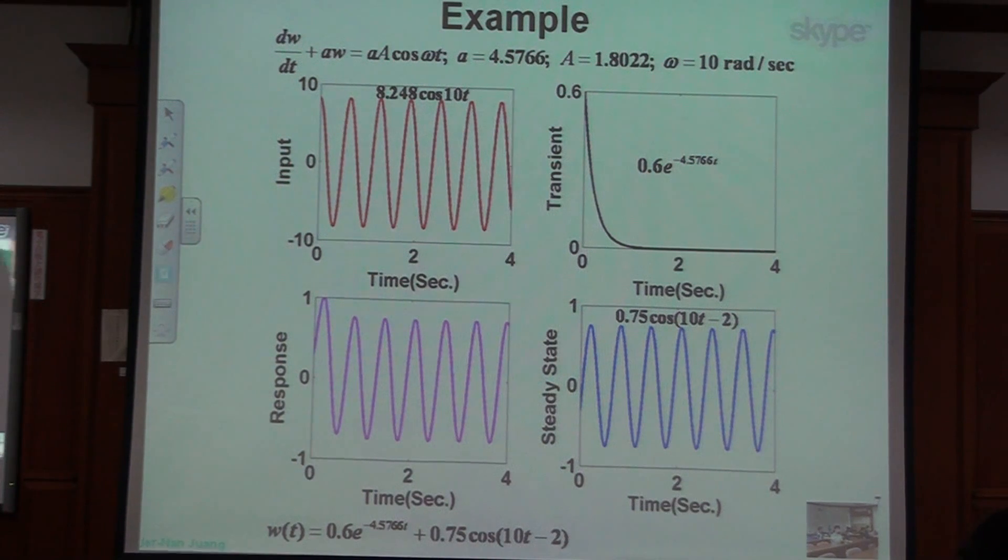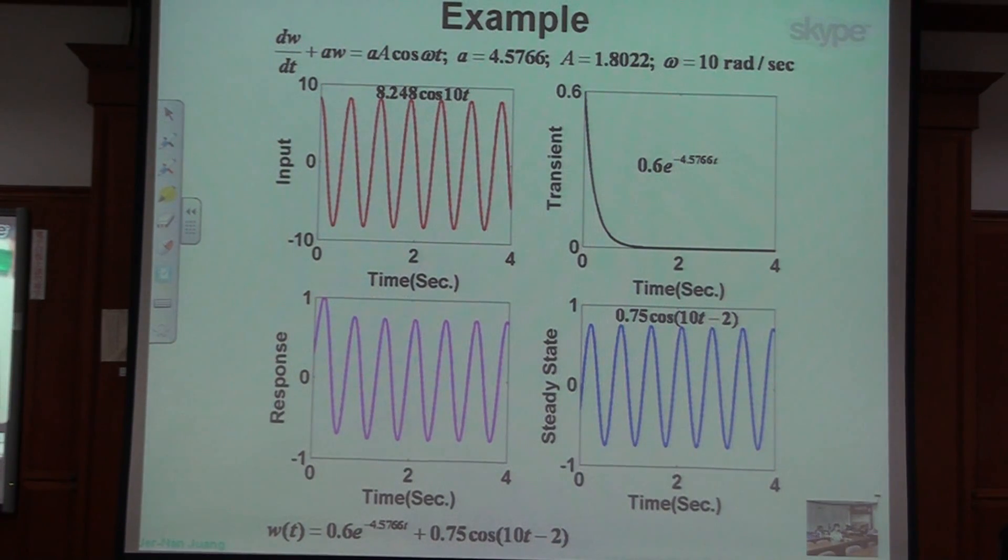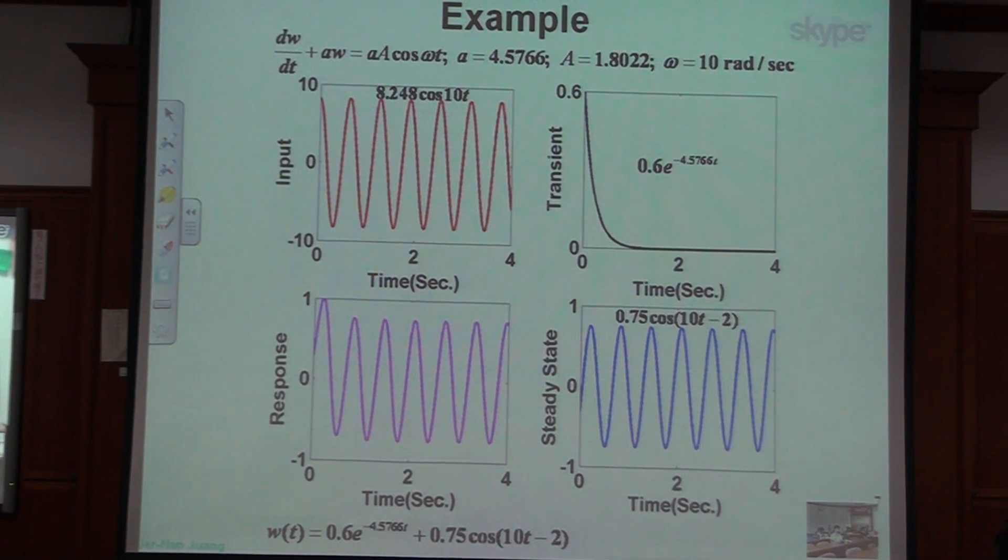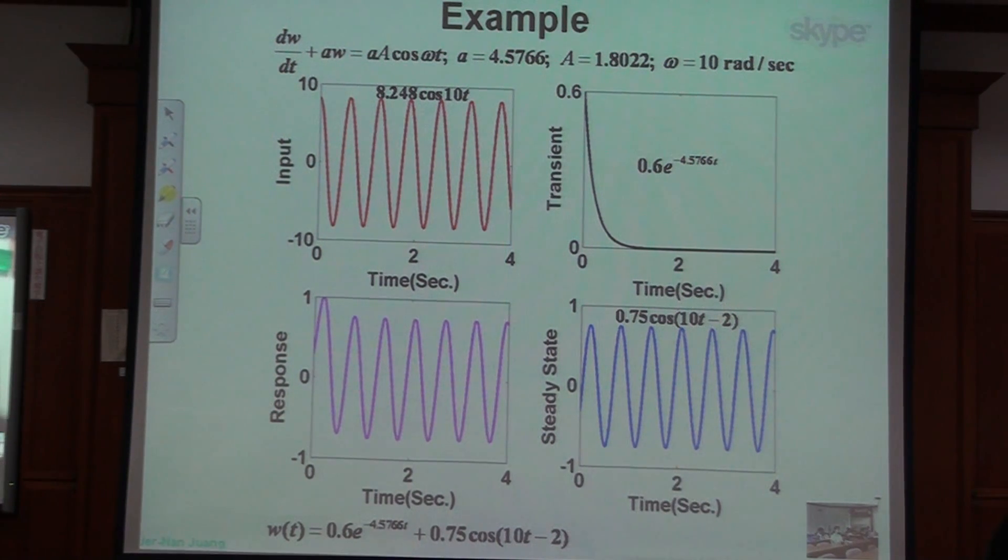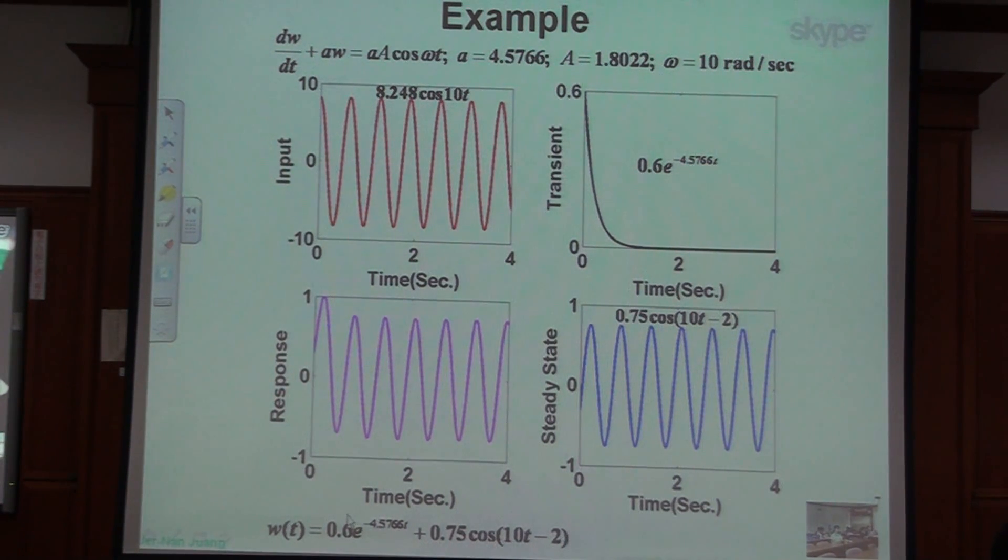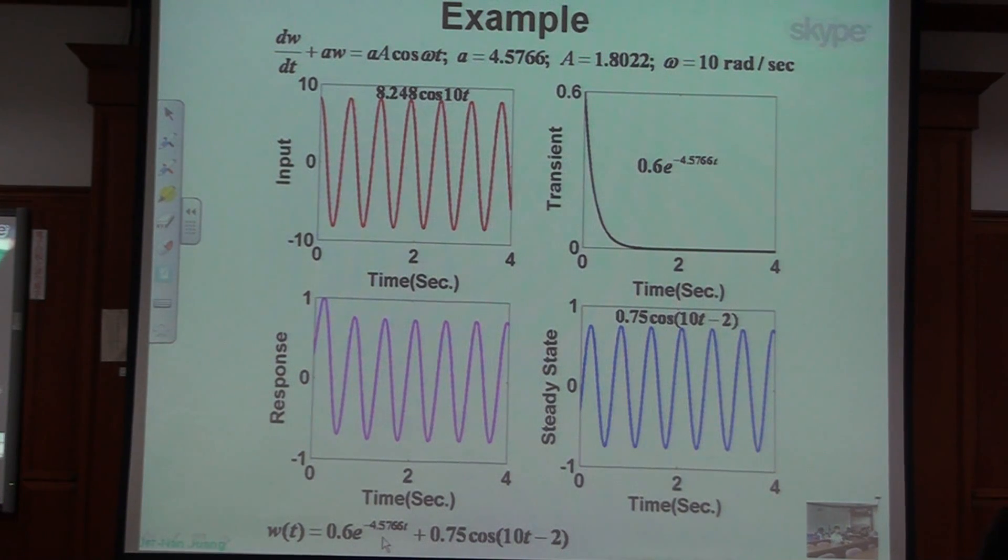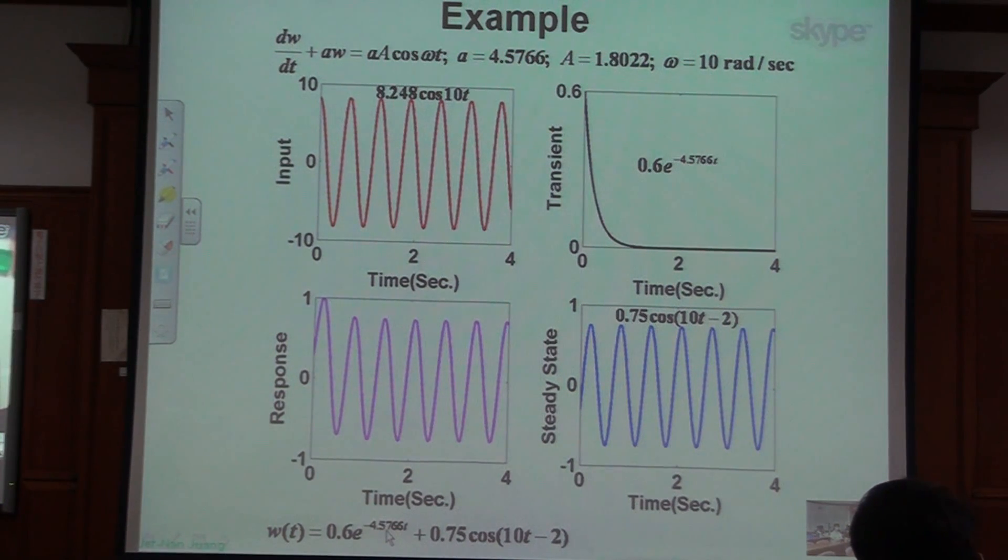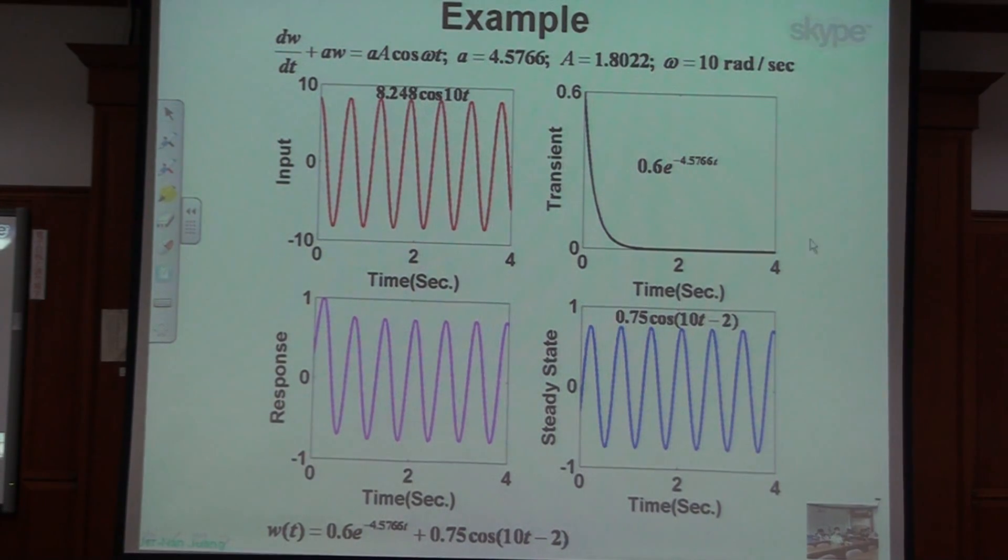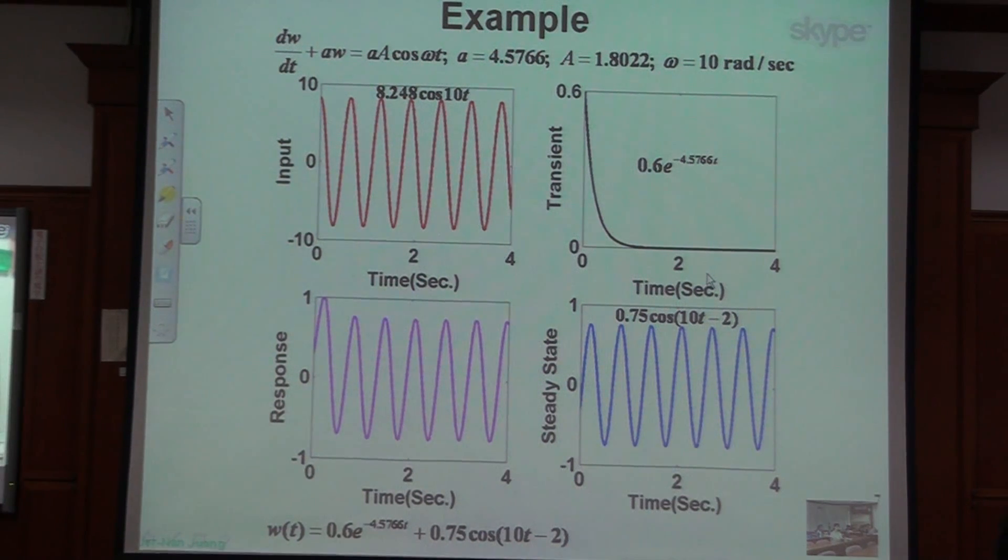So that is the solution, that's the response functions. It has two parts, one is transient I just finished. So if I don't have a transient, I don't have this 0.6. If I don't have any initial condition, I don't have this 0.6 exponential minus 4.5766t. That means I don't have transient. If I don't have the initial condition, transient solutions are gone. But I have a steady state.